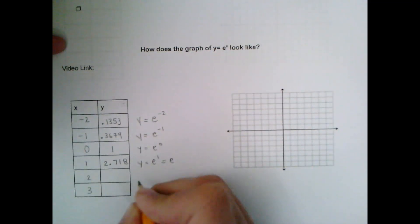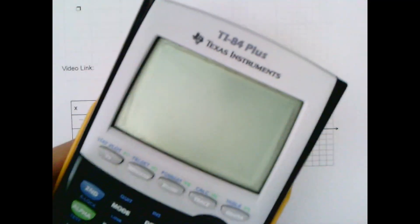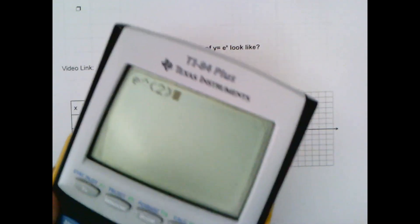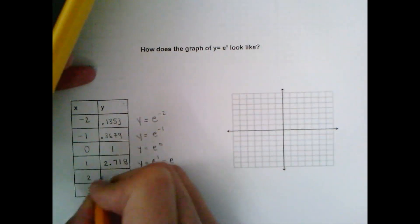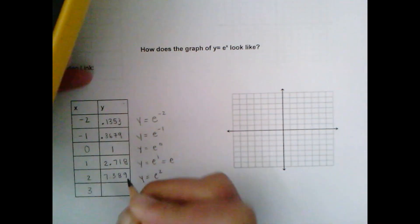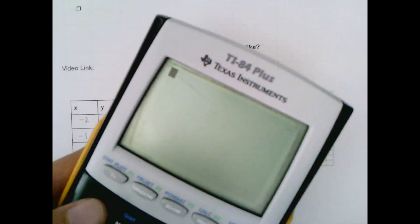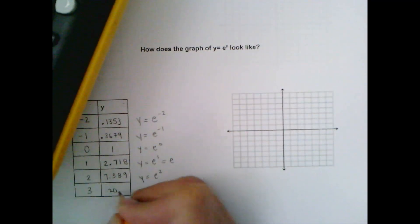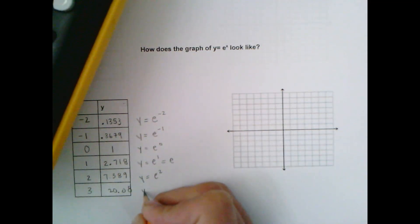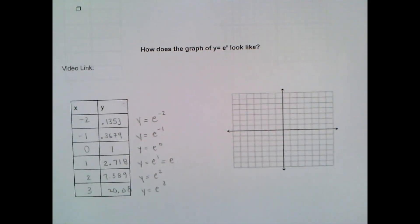Next value we're going to plug in e squared here so e squared I will be using my calculator for and that's 7.389. Lastly e to the third power that's about 20 and that's going to go off our graph and that's okay. Okay so here is our input output table. Let's go ahead and see what this graph therefore looks like.